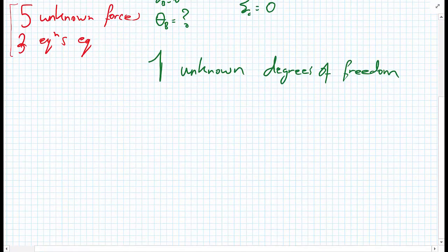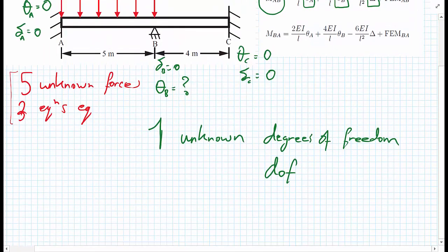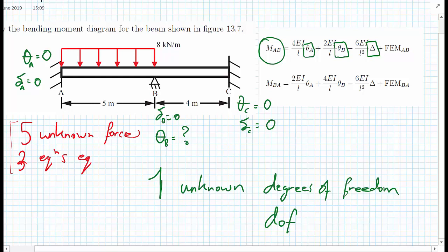In this whole system, we only have one unknown deflection or rotation. Instead of writing 'deflections and rotations' each time, we group them together and call them degrees of freedom — or DOF for short. There is only one unknown, which is phi_B. We'll now show the procedure using the slope deflection equations to calculate phi_B, and finally get our member end moments at A, B, and C, then draw the resulting bending moment diagram.